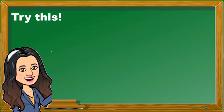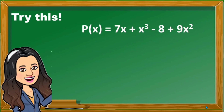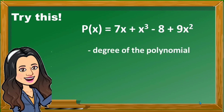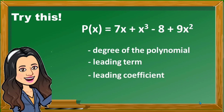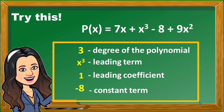Another one. Given the polynomial p of x is equal to 7x, plus x cubed, minus 8, plus 9x squared — identify the degree of the polynomial, the leading term, leading coefficient, and the constant term. The answers are: degree 3, leading term x cubed, leading coefficient 1, constant term negative 8.